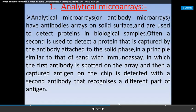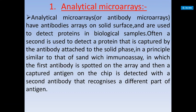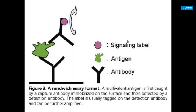Analytical microarray is used to detect proteins in biological samples. Often a second antibody is used to detect the captured protein. The principle is similar to an immunoassay — the first antibody is spotted on the array, captures the antigen, and then a second antibody that recognizes a different part of the antigen is used for detection.